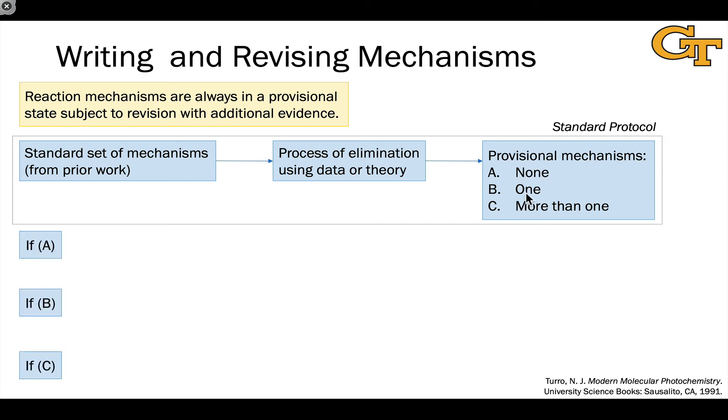And so after we've applied this sort of standard protocol to generate provisional mechanisms, let's talk about the three possibilities of where we go from there. Let's start by considering case B, the simplest case where we have one provisional mechanism. We have now established what we might call a plausible mechanism for the process in that we've ruled out all other alternatives from our standard set based on prior work using existing experimental data. This doesn't mean that it won't be replaced later when new evidence comes to light, but for the time being we have established a plausible mechanism.